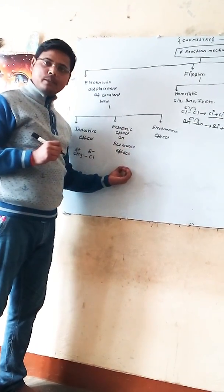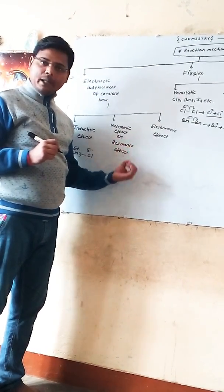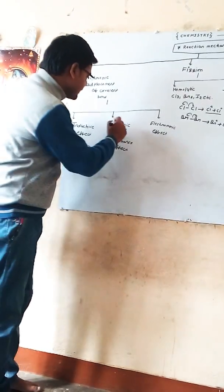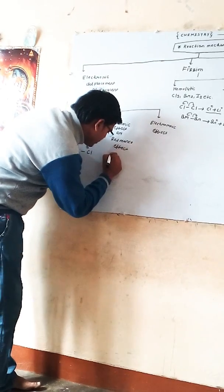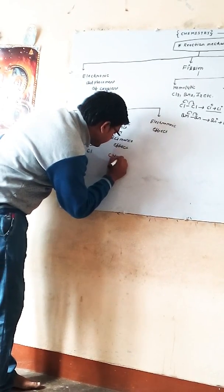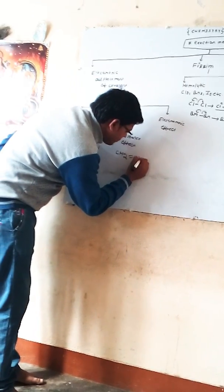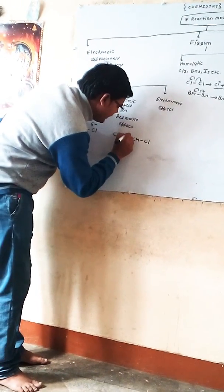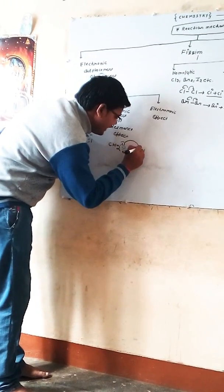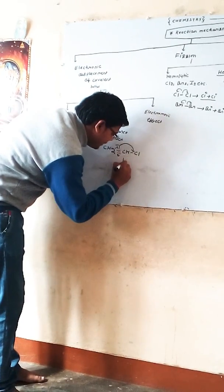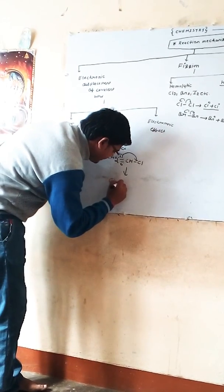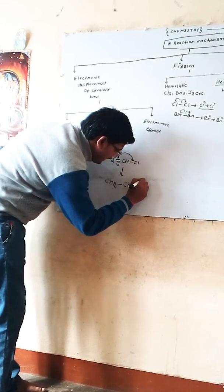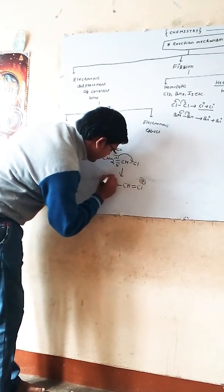Mesomeric effect or resonance effect: displacement of pi bond due to the presence of conjugation is known as mesomeric effect, also known as resonance effect. For example: CH2=CH-Cl — one sigma bond and one pi bond. Displacement of pi bond due to conjugation gives CH2-CH=Cl, with a positive and negative charge.